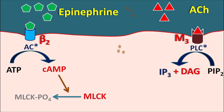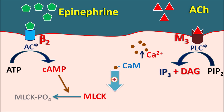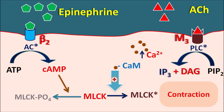IP3 releases calcium from internal stores, and diacylglycerol increases calcium permeability into the cell. Both mediators increase calcium levels within the bronchial smooth muscle. The raised intracellular calcium binds with calmodulin, forming a calcium-calmodulin complex, which activates MLCK. When MLCK is activated, it results in formation of the actin-myosin light chain complex, causing contraction of the bronchial smooth muscle. In this way, acetylcholine produces bronchoconstriction through IP3 and diacylglycerol.